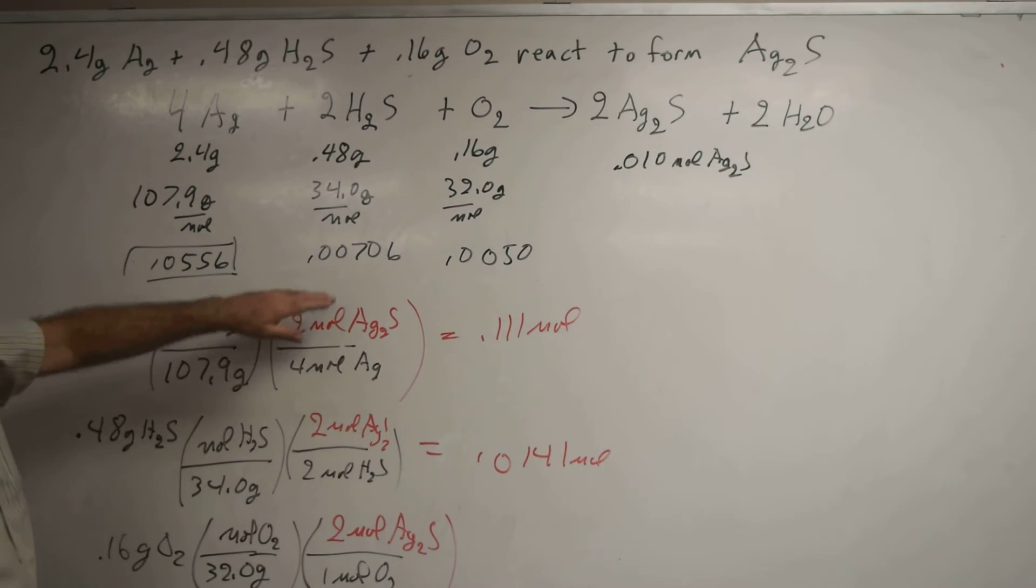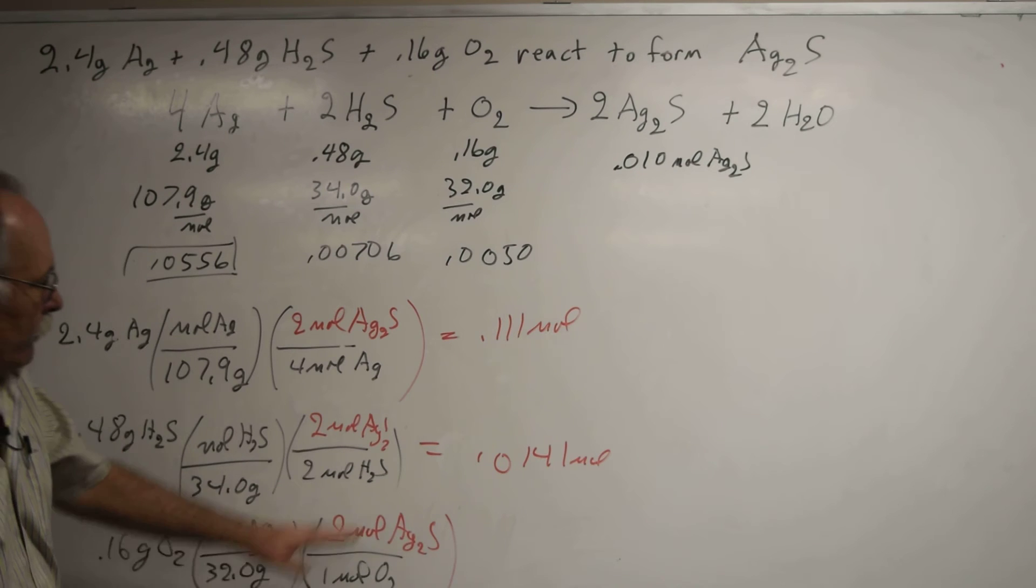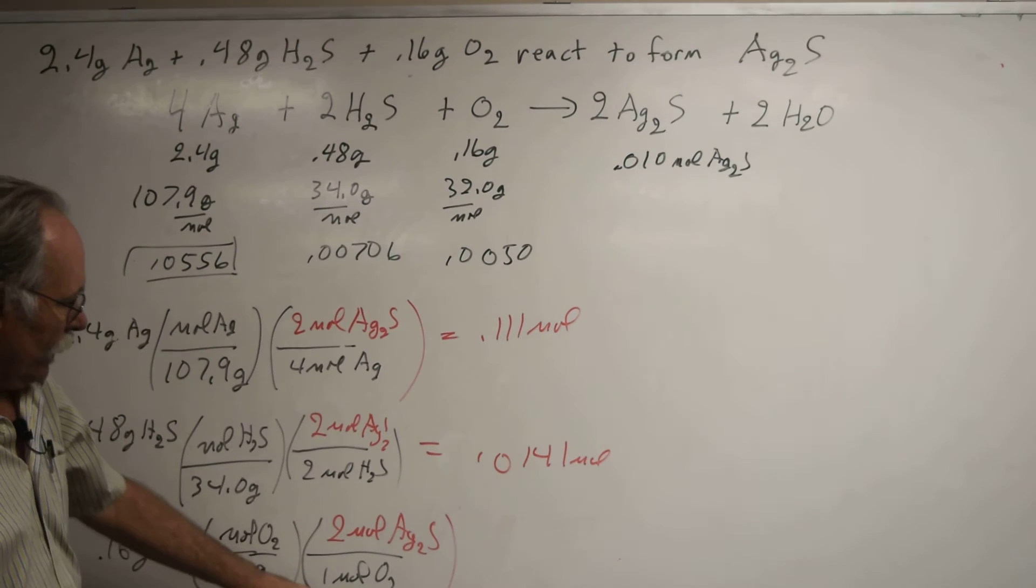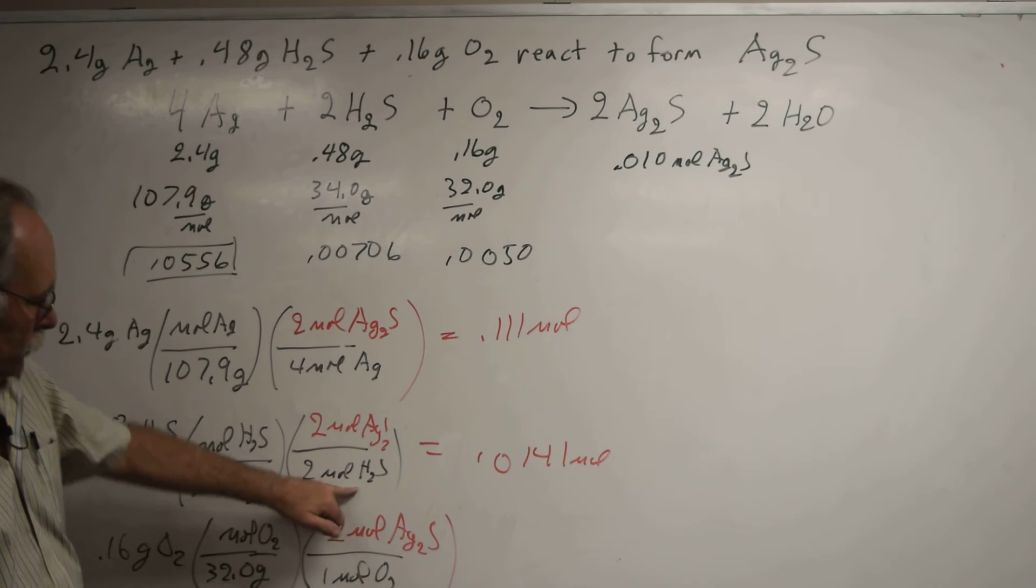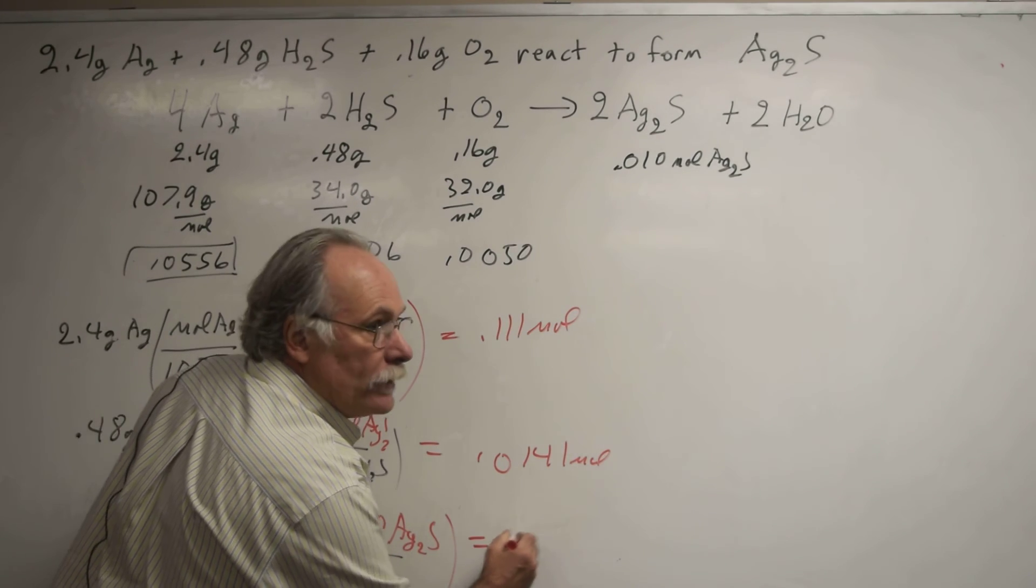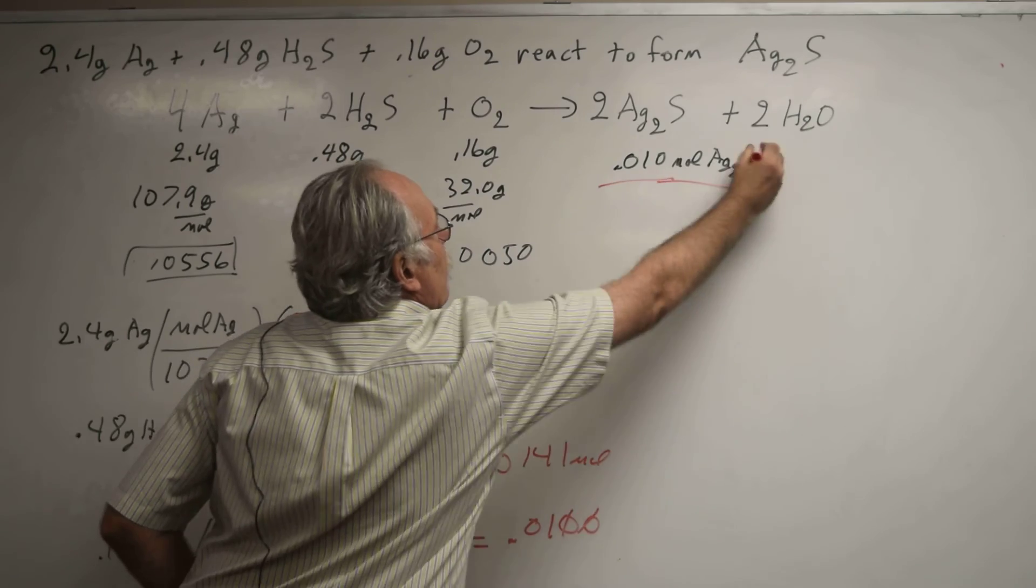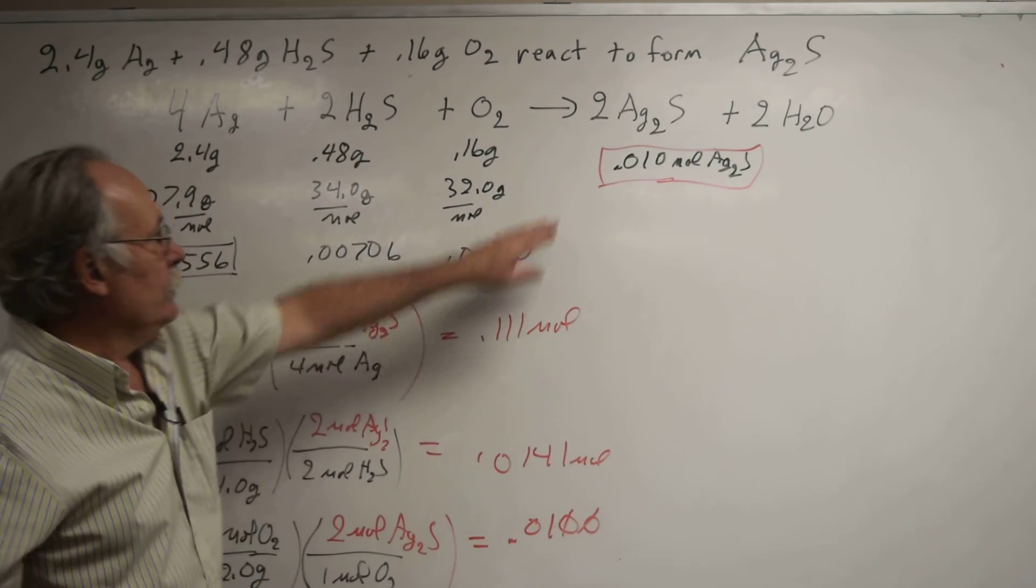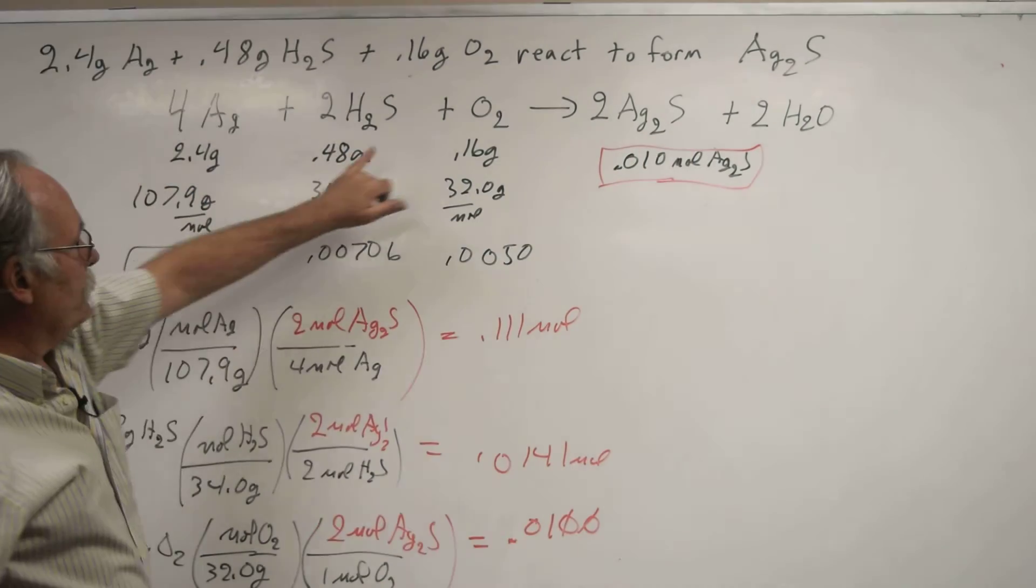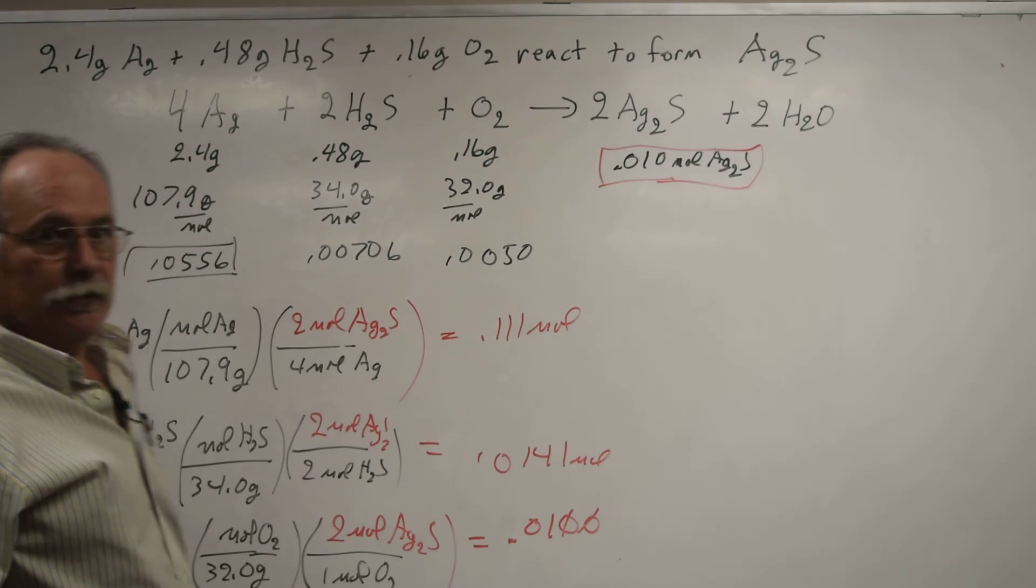But we noted that since this was the smallest number, this would have run out first. When I take 0.16 divided by 32, divide by 1 and multiply by 2, I get 0.0100. That is the mass of silver sulfide produced. Since this number had two sig figs, two sig figs, and two sig figs, I would express my answer to two sig figs.